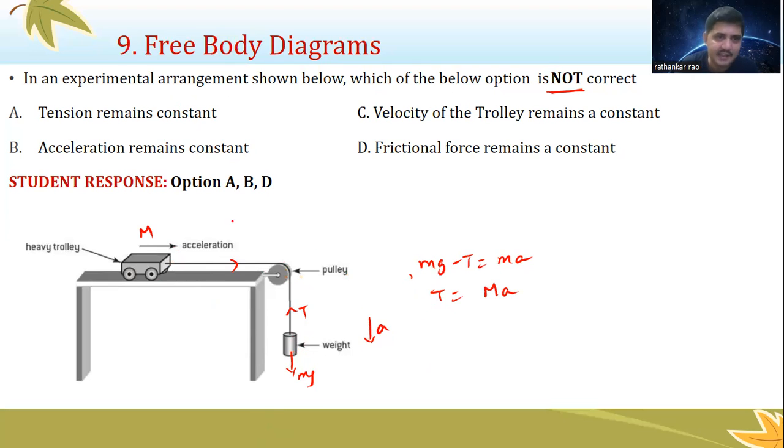Acceleration remains constant. See, this is not a rubber band, this is a string. So if this weight moves with an acceleration, every part in the string which is inextensible will also move by the same distance and with the same acceleration. So acceleration should also remain constant. Correct.